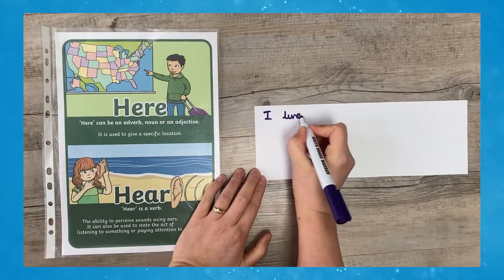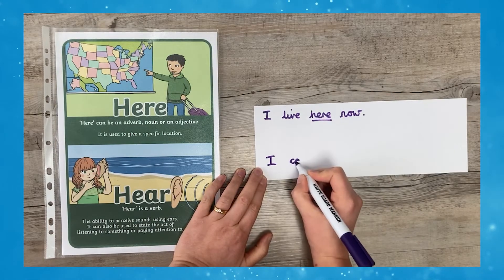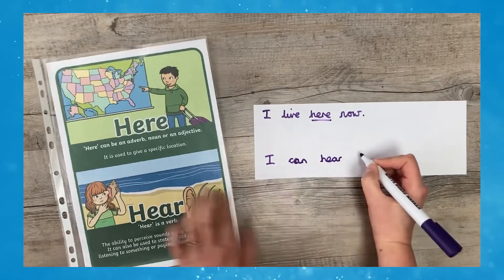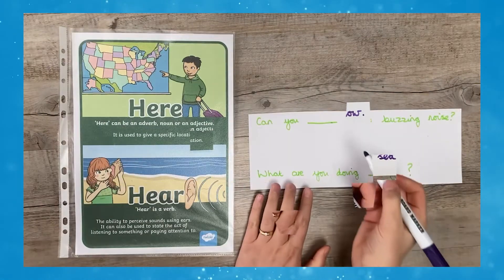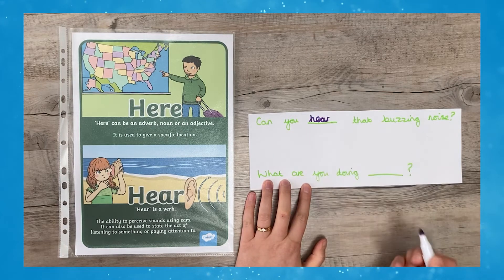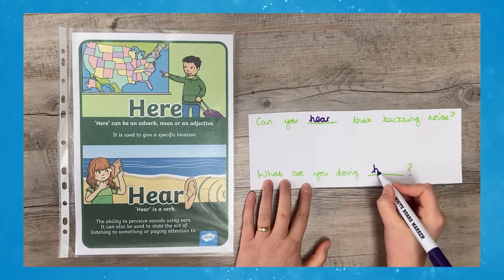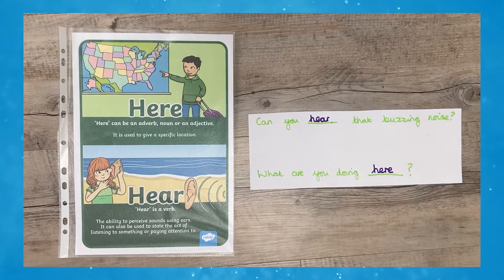You could laminate the posters and leave them on tables, challenging children to write a sentence for each homophone. Or why not give the children missing sentences and ask them to choose which homophone should be used? Can children think of other homophones that they could create their own poster for?